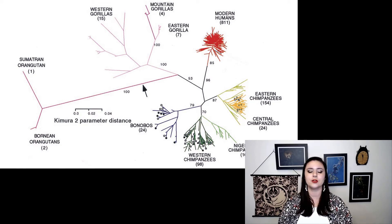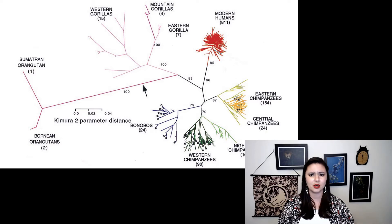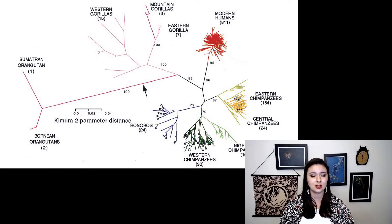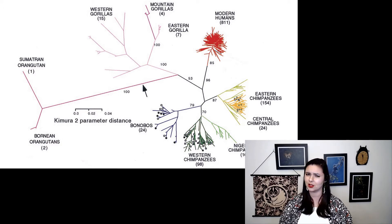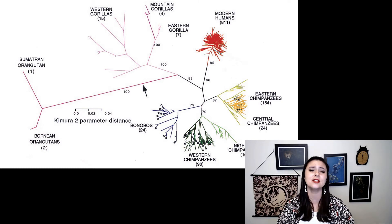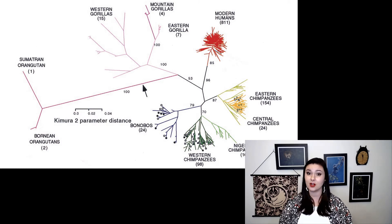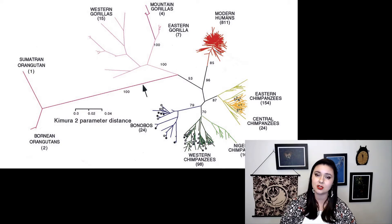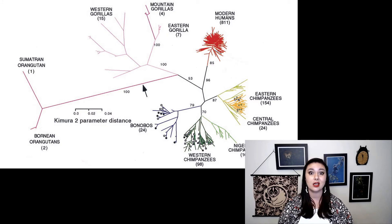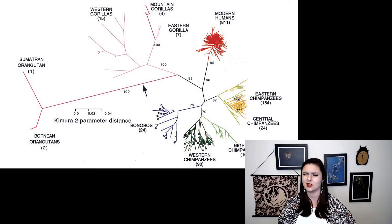Now if you look at modern humans, it's all kind of one gigantic mess. We have more samples than the others — 811 — but they're all super close to each other and overlapping. This means that all humans are very closely related to each other, and we actually have less genetic variation in humans than we see in chimpanzees, even though they're endangered.